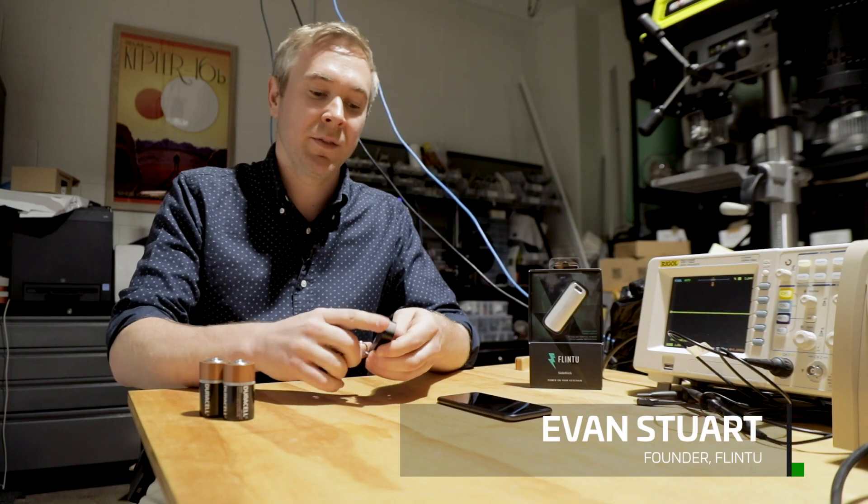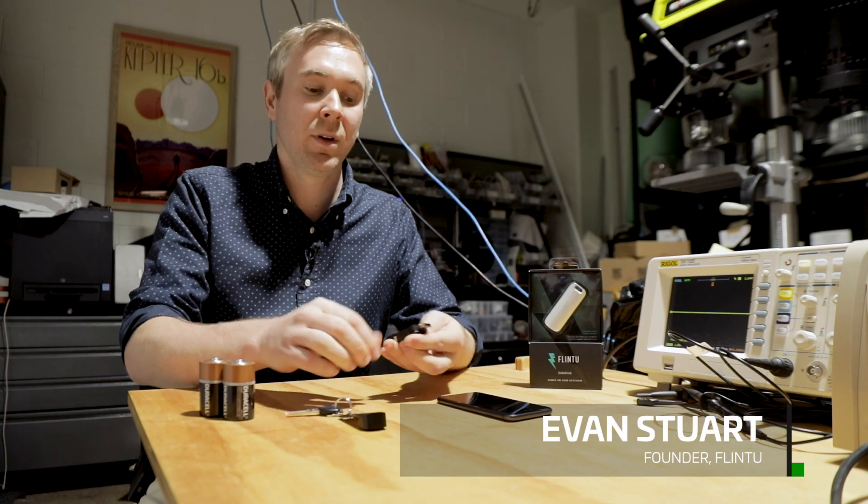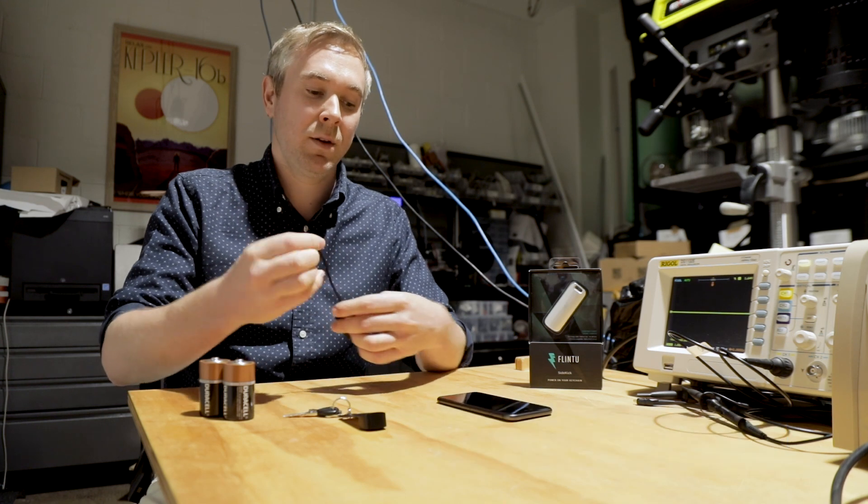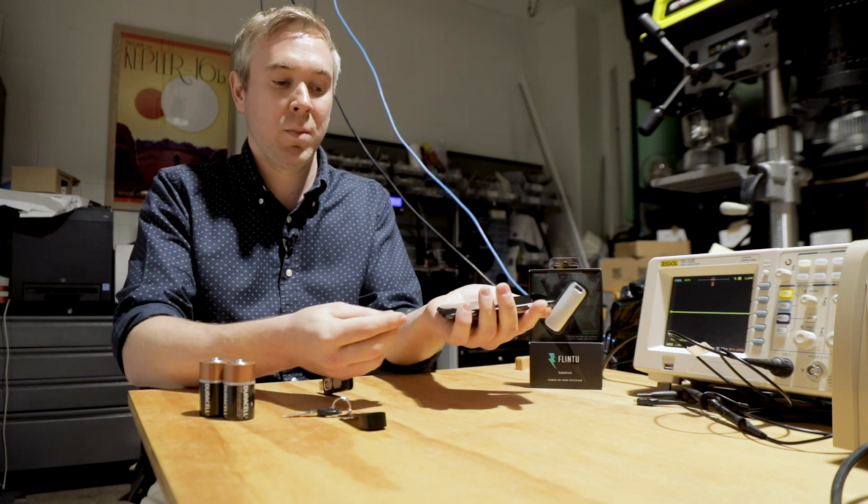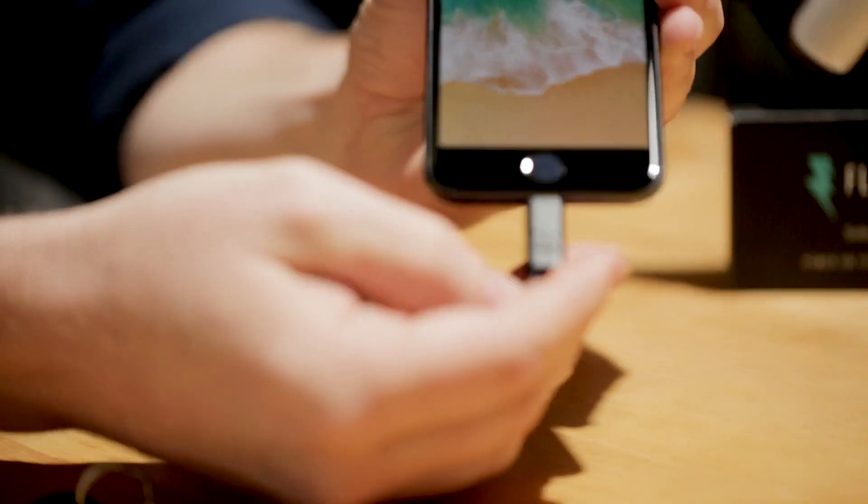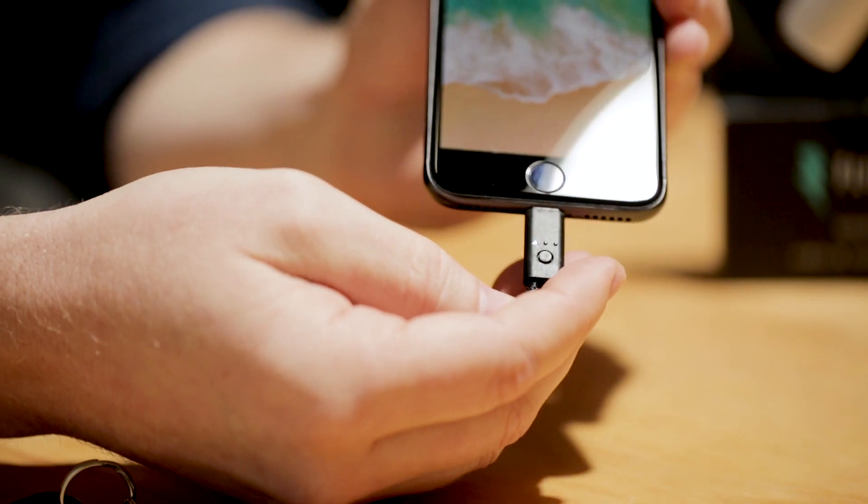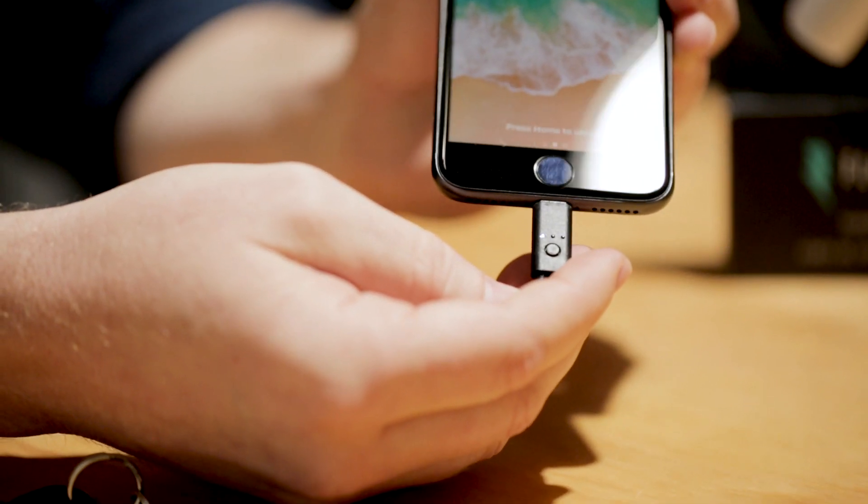So the first feature of Sidekick is the internal battery. If we take the cable out and plug this into your phone, you can see there, we've started charging. This is good for about two hours talk time.